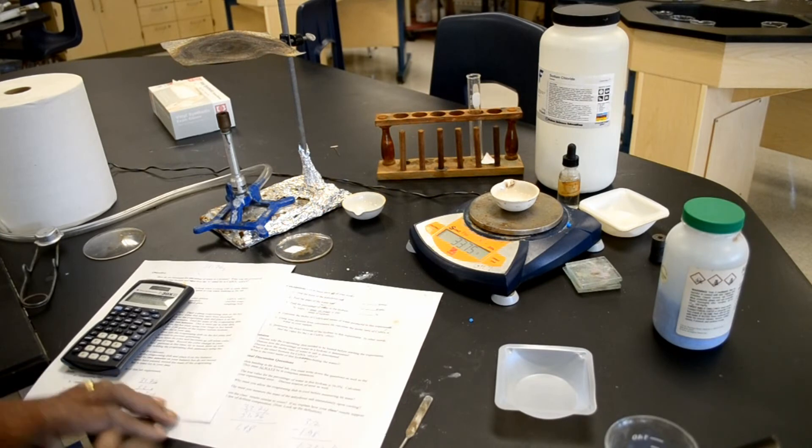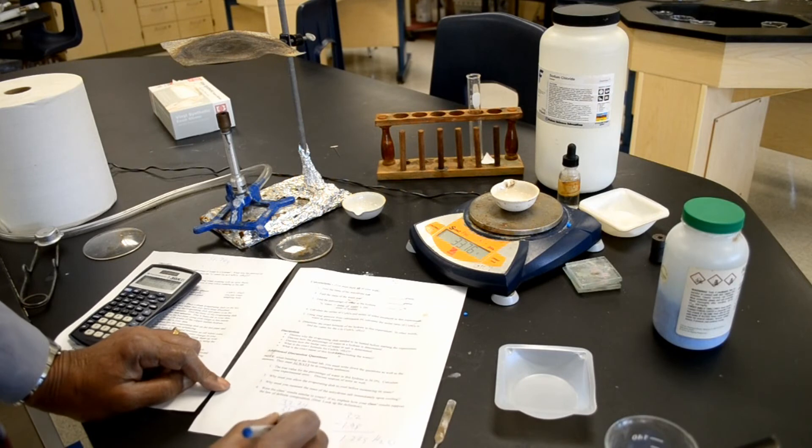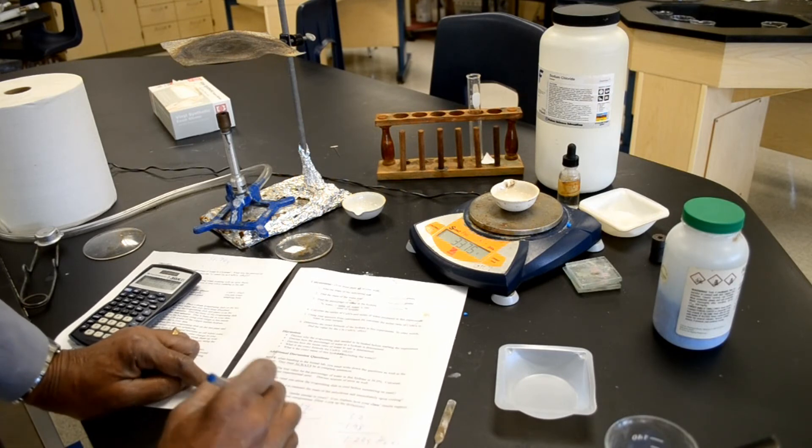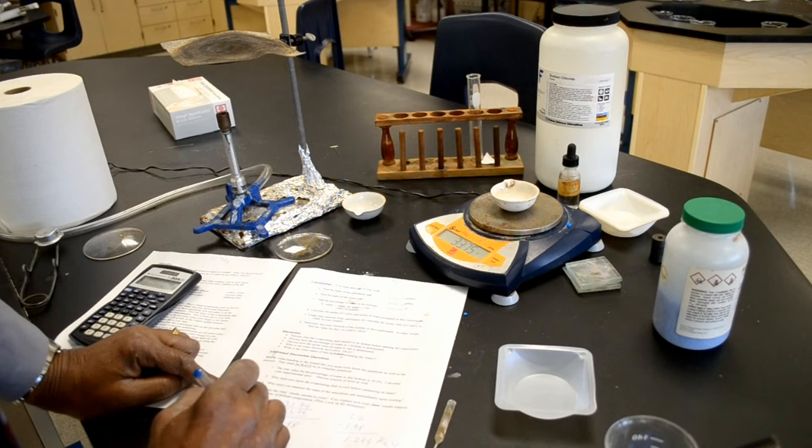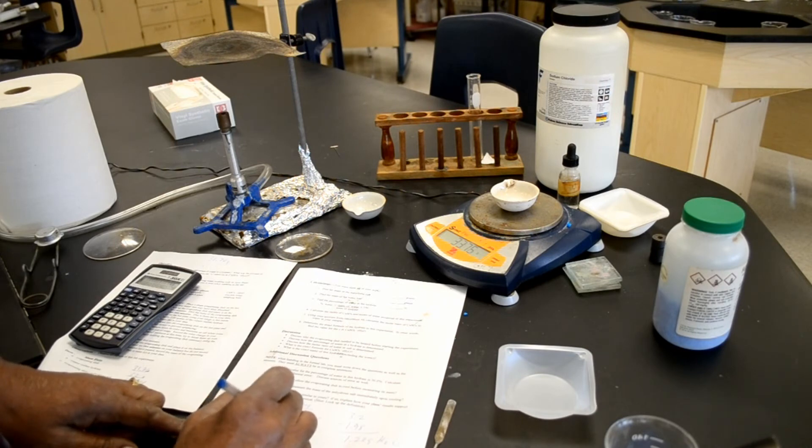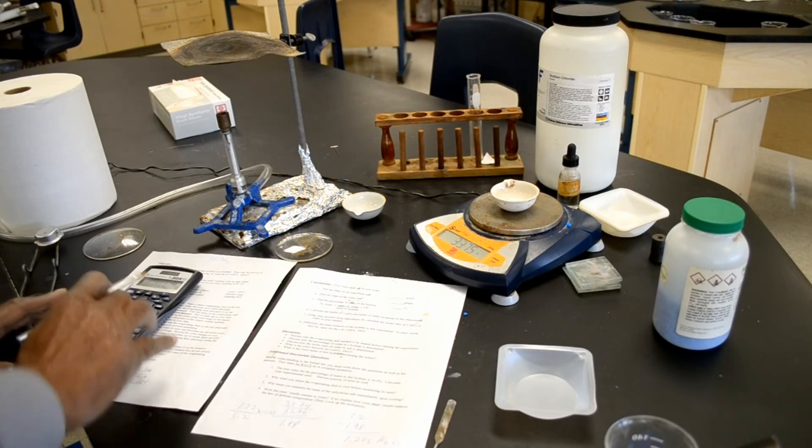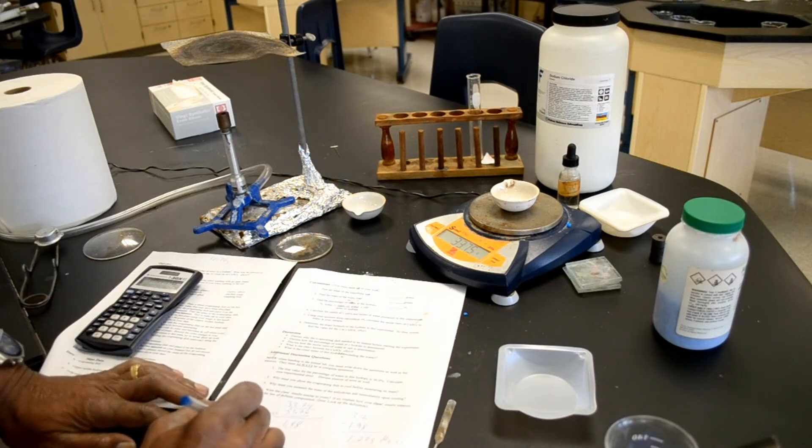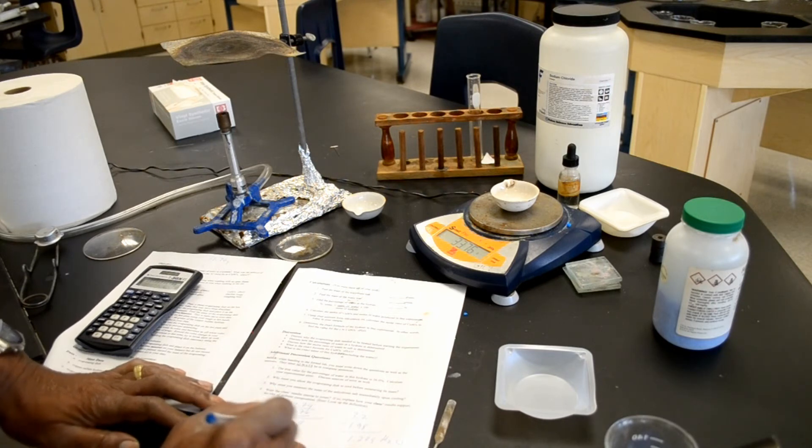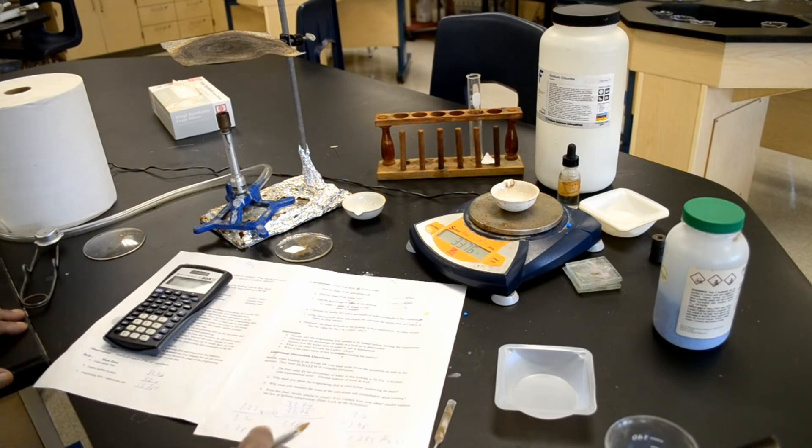Now, to find the percent of water that was in the hydrate. In order to find the percent of water, you divide the mass of the water, which was 1.22, by the mass of the hydrate, which was 3.2 times 100. So, 1.22 divided by 3.2 equals 38, well, 38 percent of water. That's the amount of water that was in the hydrate.